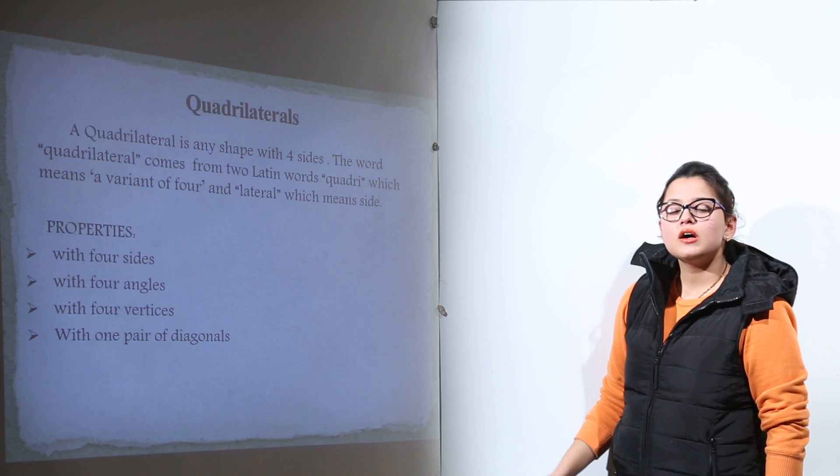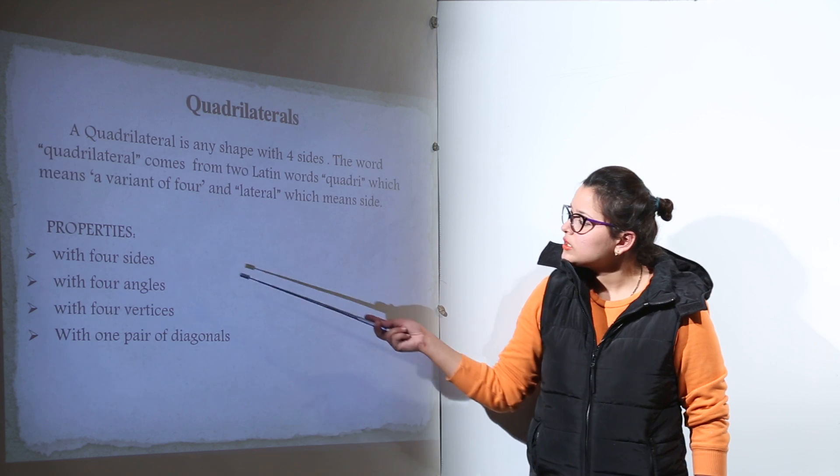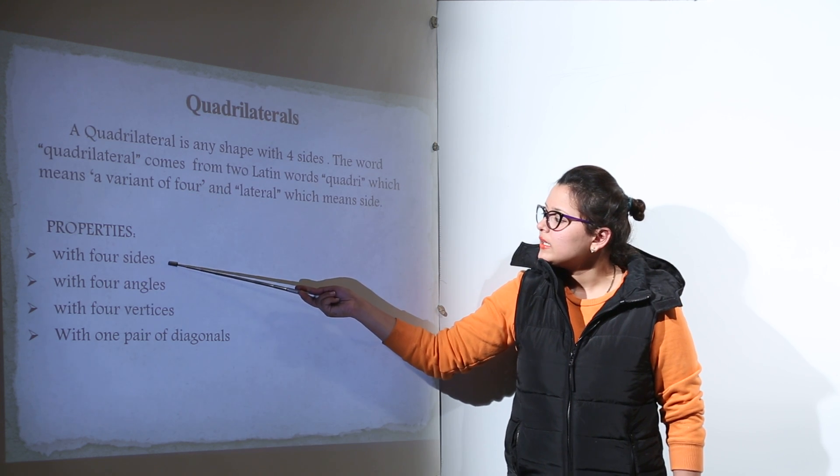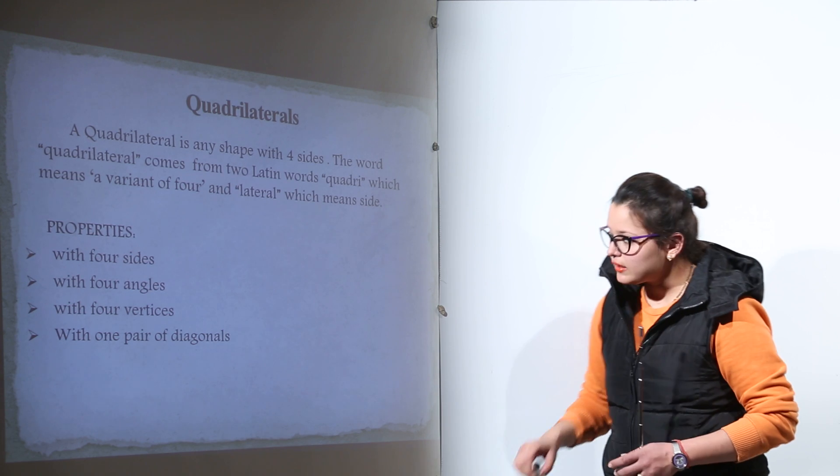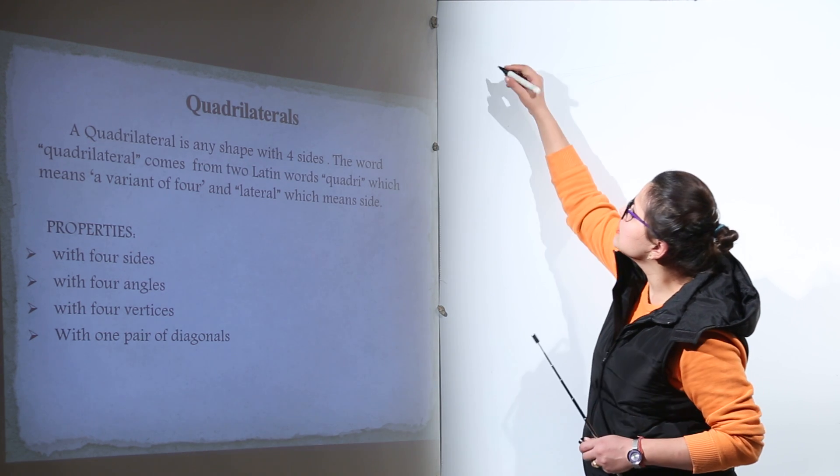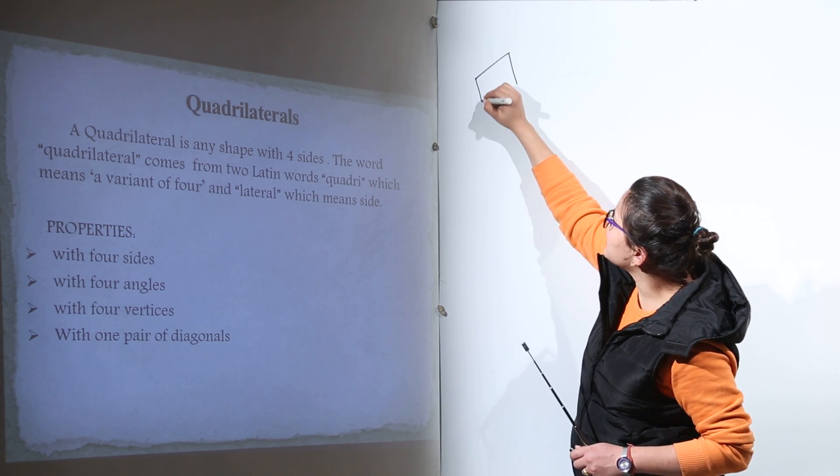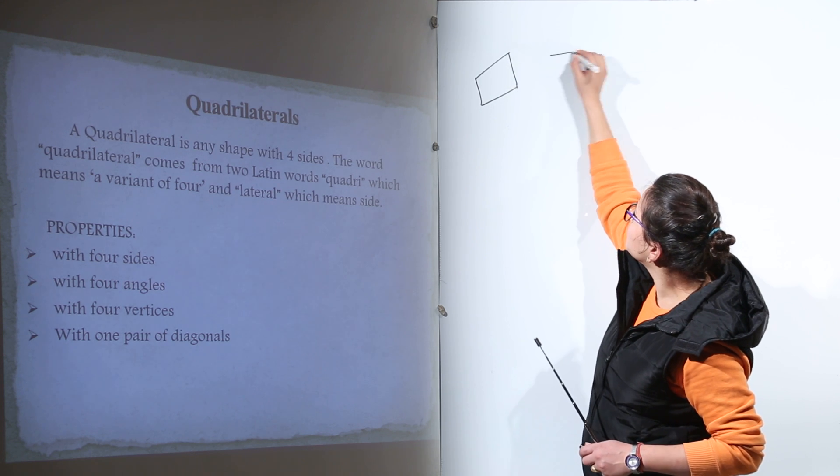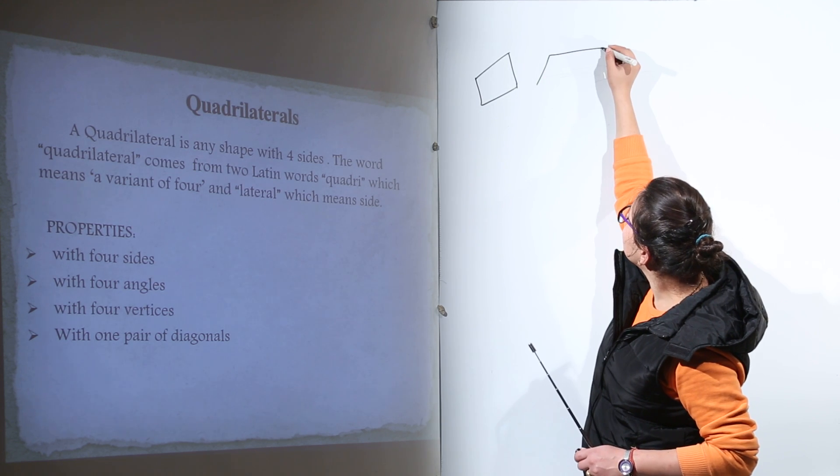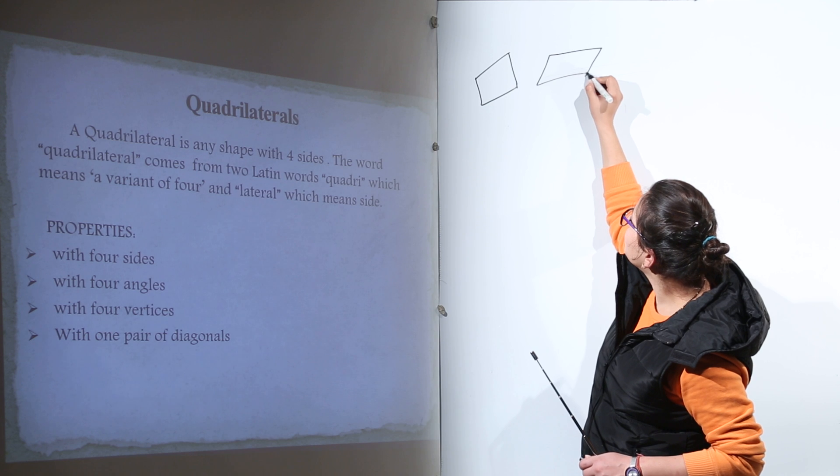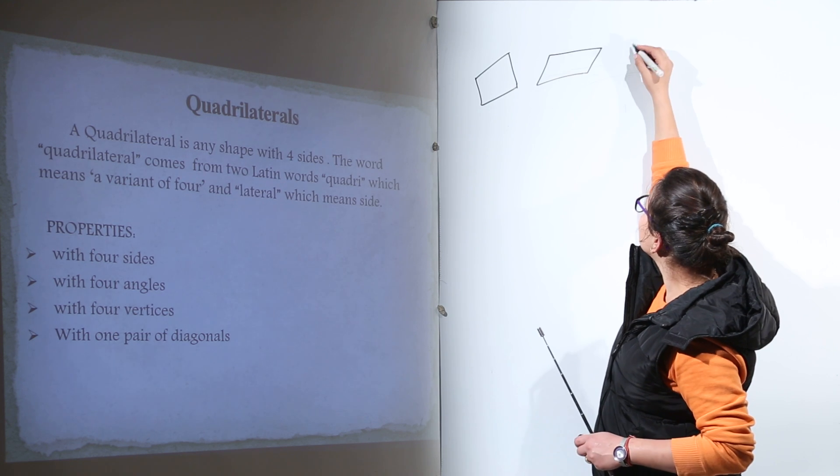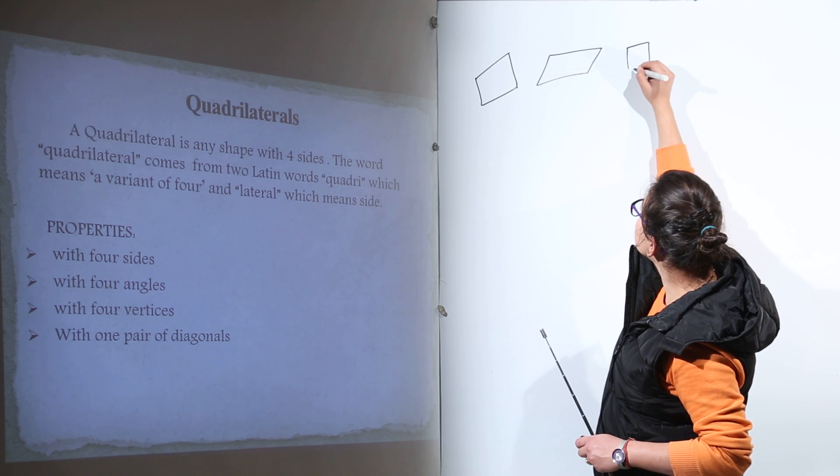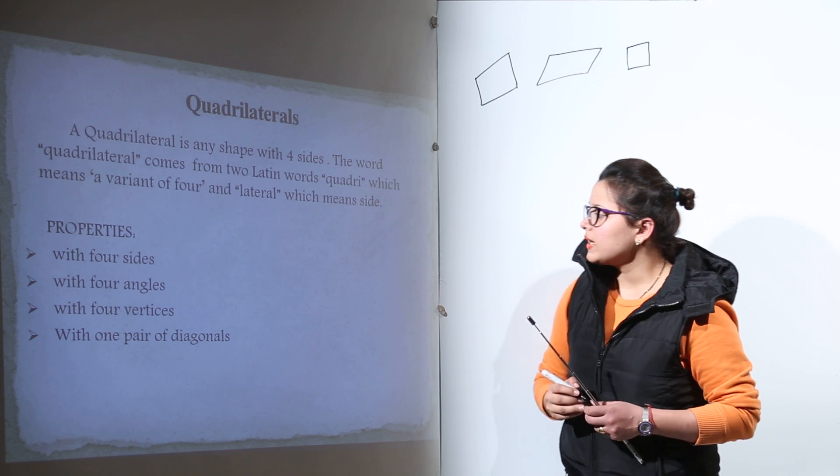What will be the properties of quadrilaterals? The first property is that it has four sides. Any polygon that has four sides will be known as a quadrilateral, regardless of the shape or angles.